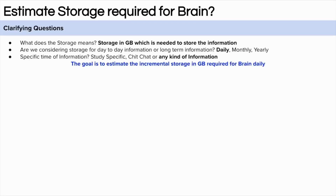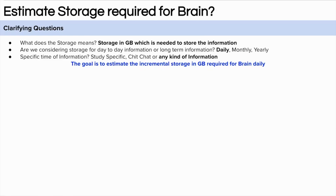First, let's start with the clarifying questions. The very first question we can ask is: what does storage mean here? It means the storage in GB required to store the information processed by the brain. The second question is about the storage timeframe — every day a lot happens and your brain consumes information, so storage for one day differs from monthly storage. Let's assume we are only thinking about the incremental storage required for a single day of information.